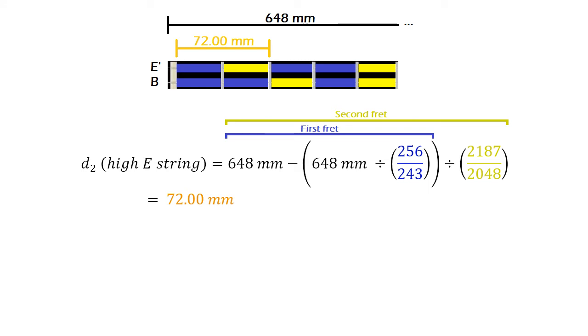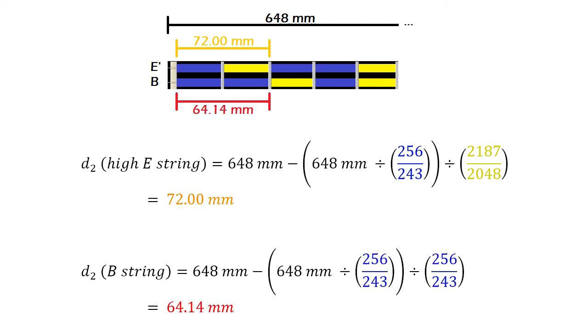But for the B string, the second fret would have to be placed at 64.14mm. The distance of the same fret is different for both strings.